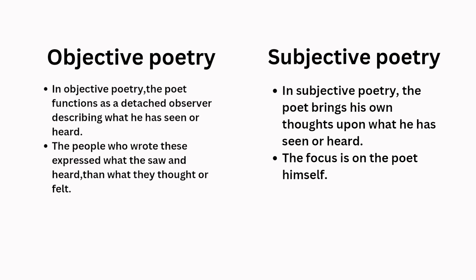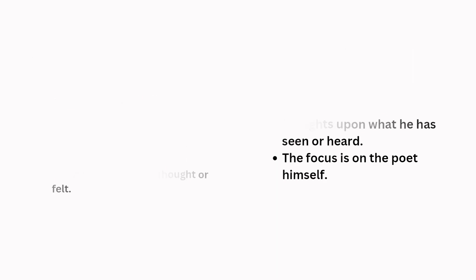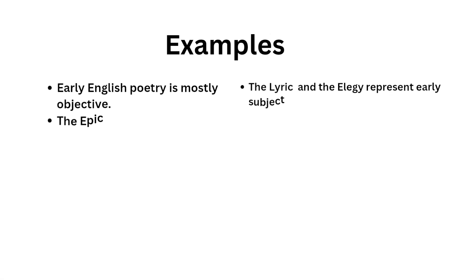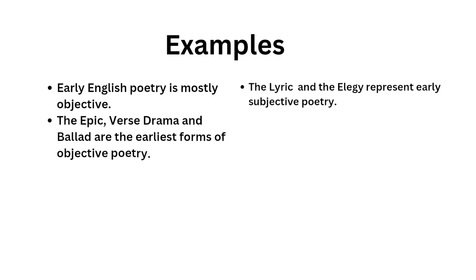In objective poetry, the poet expressed what they saw and heard rather than what they thought or felt, whereas in subjective poetry the focus is on the poet himself. For example, early English poetry is mostly objective — the epic, verse drama, and ballad are the earliest forms of objective poetry, while the lyric and the elegy represent early subjective poetry.